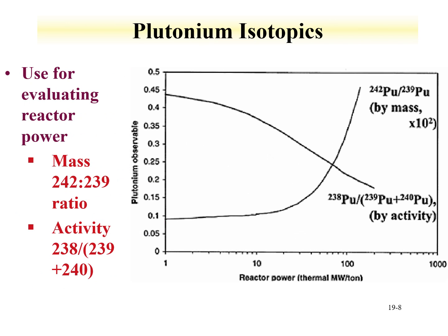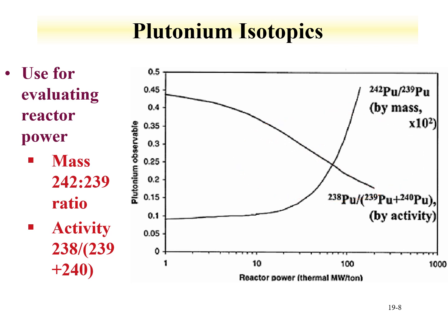Reactor power can also be evaluated through plutonium isotopics. The mass ratio of Pu-242 to Pu-239 and the activity ratio of Pu-238 to (Pu-239 + Pu-240) are used. For low reactor power, the variation is much greater for the activity ratios. Going from 10 megawatts per ton up to a few hundred megawatts per ton shows a pronounced regime change, providing two tools for determining reactor power, which in turn gives an idea of what reactor produced these plutonium samples.